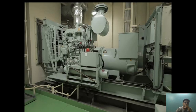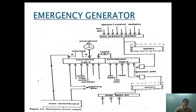This is the emergency generator which is provided on board ship so that it can provide power when there is a main power failure. As you can see in this diagram, this is a line diagram — a very simple line diagram which has been taken from the Mac George book.